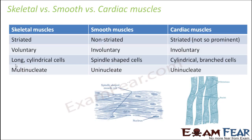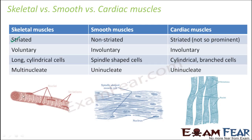Let us quickly compare skeletal, smooth, and cardiac muscles. Skeletal muscles are striated with alternate dark and light bands. Smooth muscles are non-striated. Cardiac muscles are striated but striations are not very prominent. Skeletal muscles are voluntary, whereas smooth and cardiac muscles are involuntary. Regarding shape: skeletal muscles are long cylindrical cells, smooth muscles are spindle-shaped with pointed ends, and cardiac muscles are cylindrical branched cells — not one cylinder but multiple cylinders in a branched network. Skeletal muscle cells are multinucleate, while smooth and cardiac muscles are uninucleate, having only one nucleus.